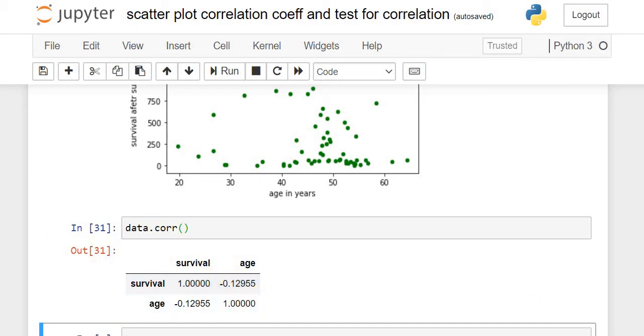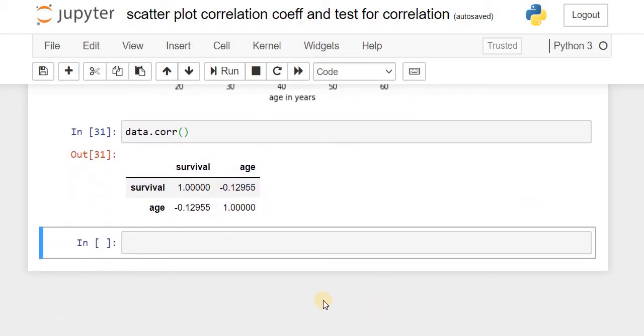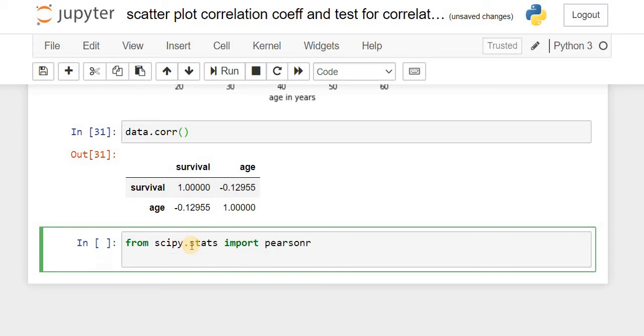Now there is a need to find the significance of the correlation coefficient. Let us import Pearson r. The command is pearsonr(data['survival'], data['age']).